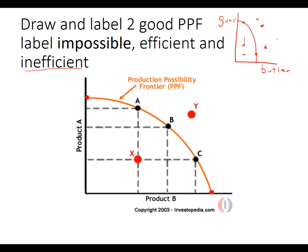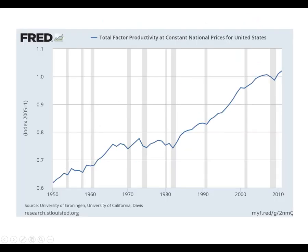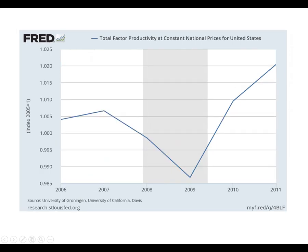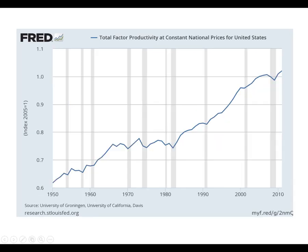If they add more land, labor, and capital, that pushes the whole frontier out — we can try to reach point Y. This is called total factor productivity: output divided by the weighted inputs of labor and capital. We've gotten way more productive than in the past. We did see a dip in total factor productivity during the Great Recession, but overall the trend is strongly upward.